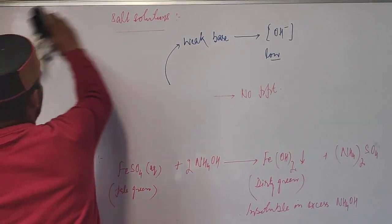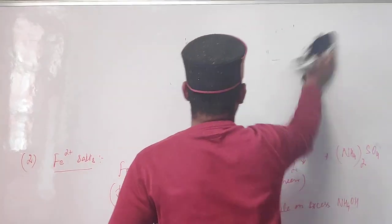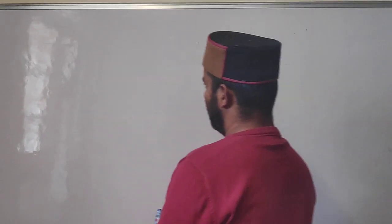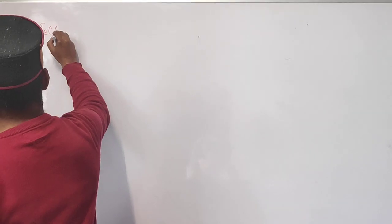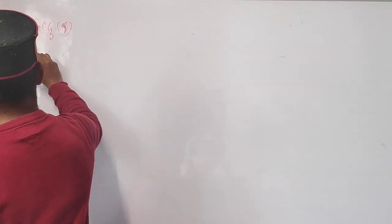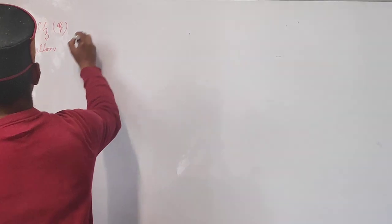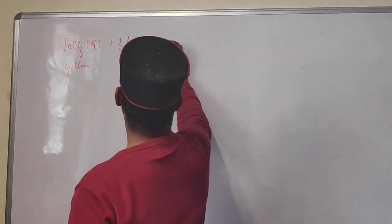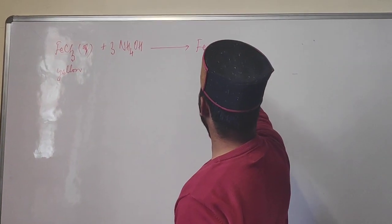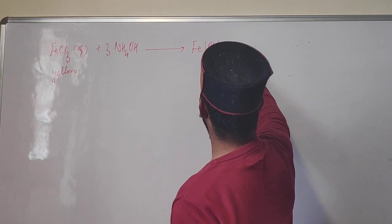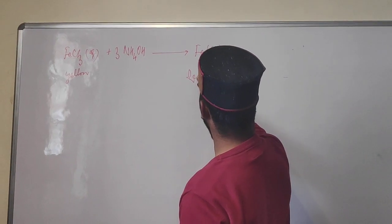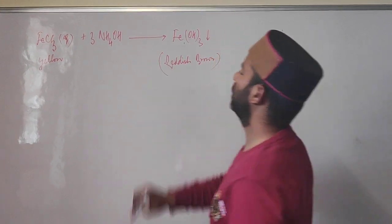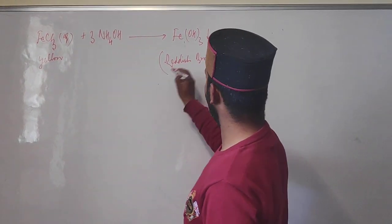Take ferric chloride — it dissolves in water to give a yellow solution. When we add ammonium hydroxide in small quantity first, there will be a reddish-brown precipitate due to the formation of ferric hydroxide Fe(OH)3.